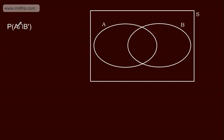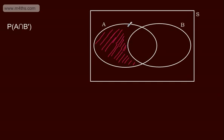The probability of A intersection not B — so this must be in A but it can't be in B, so the intersection in the middle goes. This is now telling me it's in A and it's not in B, and that's that part right there.